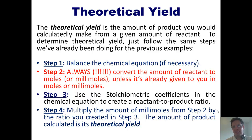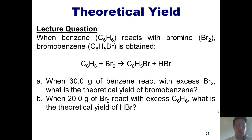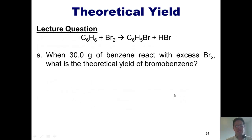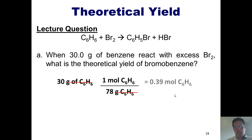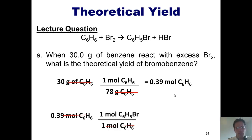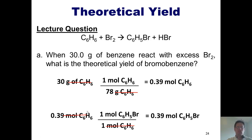We've already done this with our bromobenzene-benzene question, but let's revisit it. When we start with 30 grams of benzene with excess Br2, what is the theoretical yield of bromobenzene? We convert to moles: using the formula weight of benzene, 30 grams equals 0.39 moles of benzene. Then, moles of benzene in the denominator and moles of bromobenzene in the numerator — present in a one-to-one ratio as shown by the coefficients in the balanced equation. Thus, 0.39 moles of benzene theoretically yields 0.39 moles of bromobenzene, which is the theoretical yield.